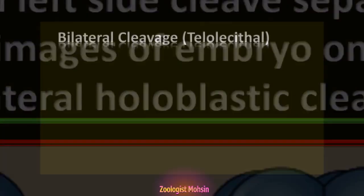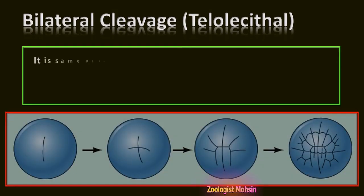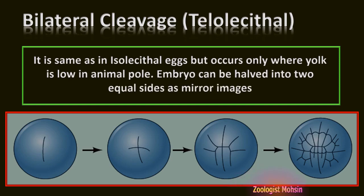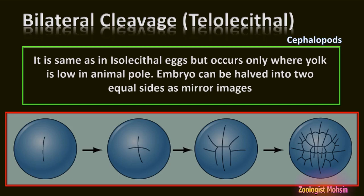Bilateral cleavage in telolecithal eggs is the same as in isolecithal eggs but occurs only where yolk is low, at the animal pole. The embryo can be halved into two equal mirror image sides, and examples include cephalopods. In telolecithal eggs, yolk is distributed unevenly, so cleavage occurs only on the side where yolk is less or absent, and the bilateral appearance is seen only on that side, not in the whole blastula.